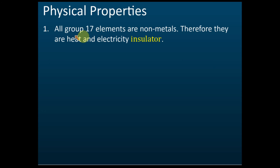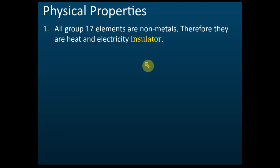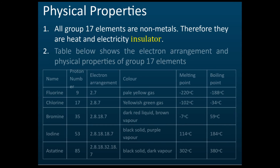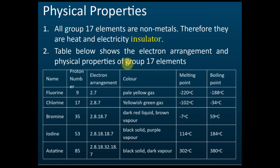All group 17 elements are non-metals, and therefore they are heat and electricity insulators. If they were metals, they would be conductors — all metals are good heat and electricity conductors — but group 17 elements are non-metals and therefore they are heat and electricity insulators.